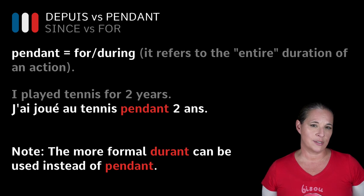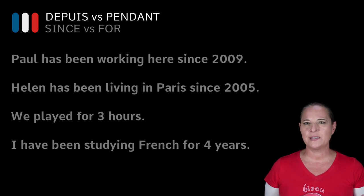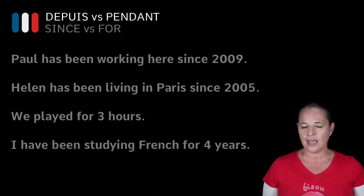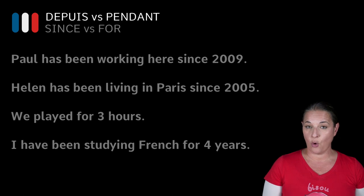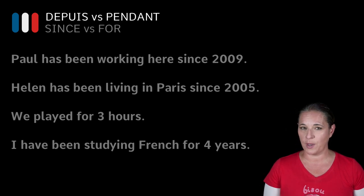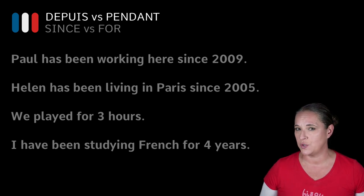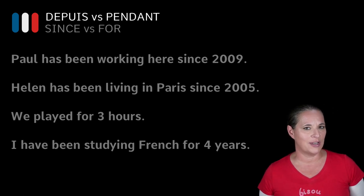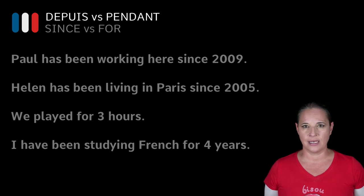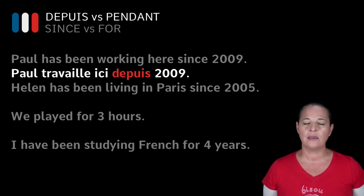Let's look at a few examples and figure out which one to use in French. 'Paul has been working here since 2009.' Think: is the action gone, done, finished, over with? Or has it started in the past and is still happening? If it's still happening, you need to use 'depuis.' Indeed, Paul started working there in 2009 and is still working there — so it's definitely 'depuis': 'Paul travaille ici depuis 2009.'